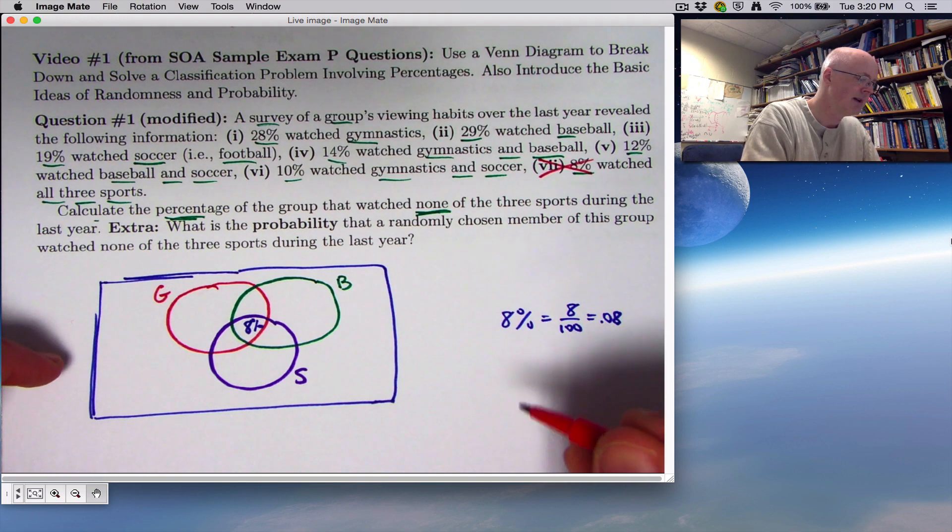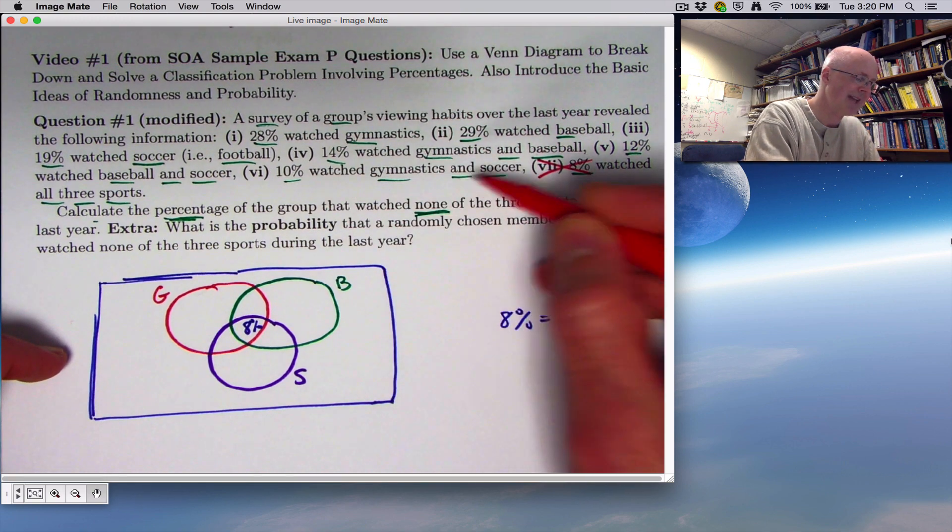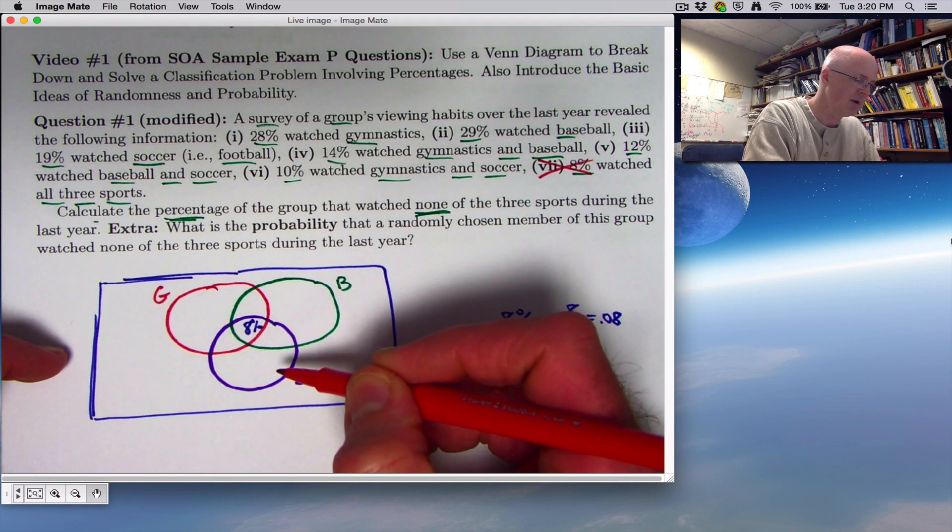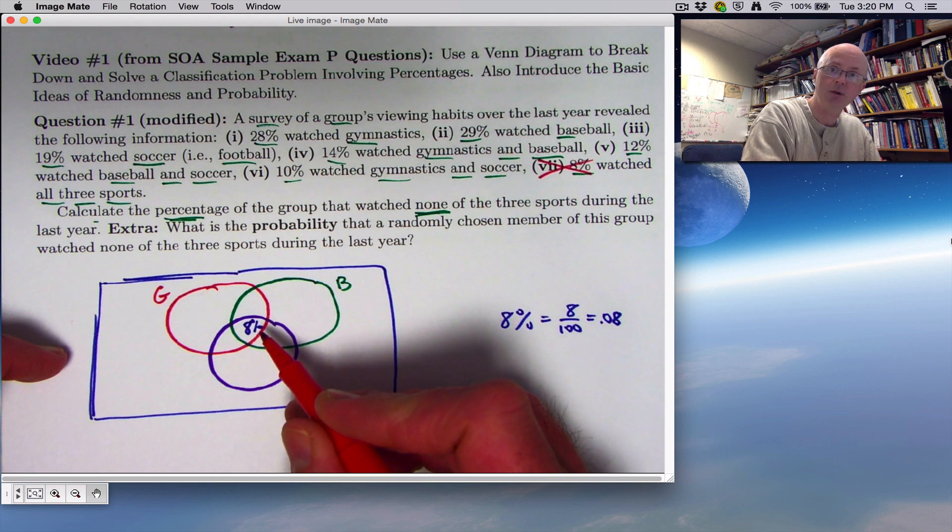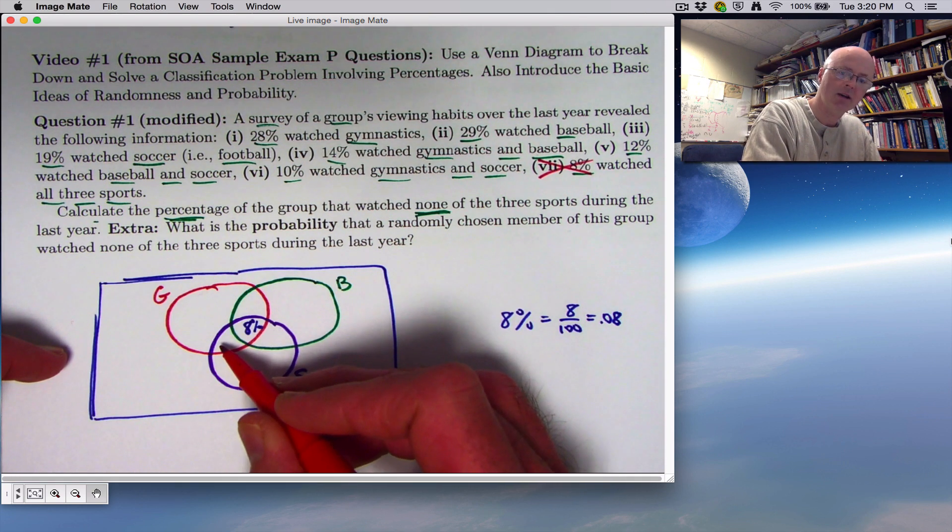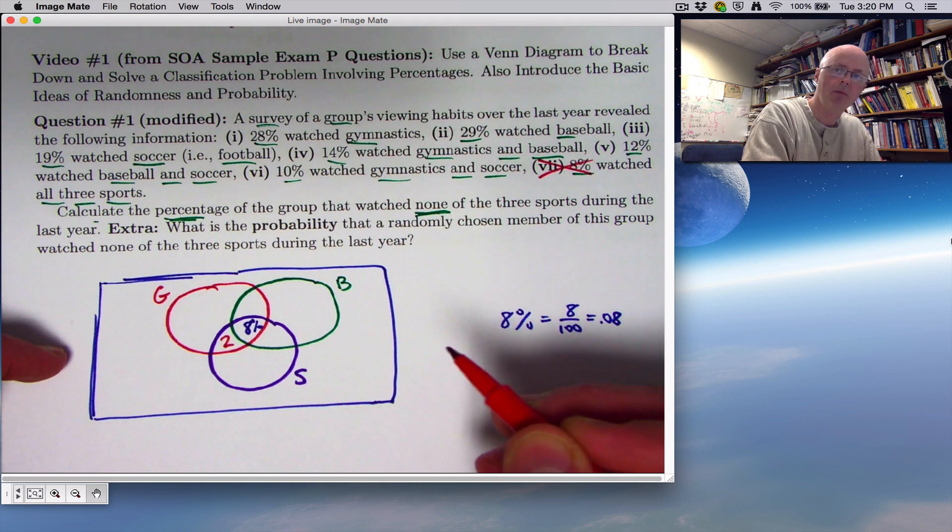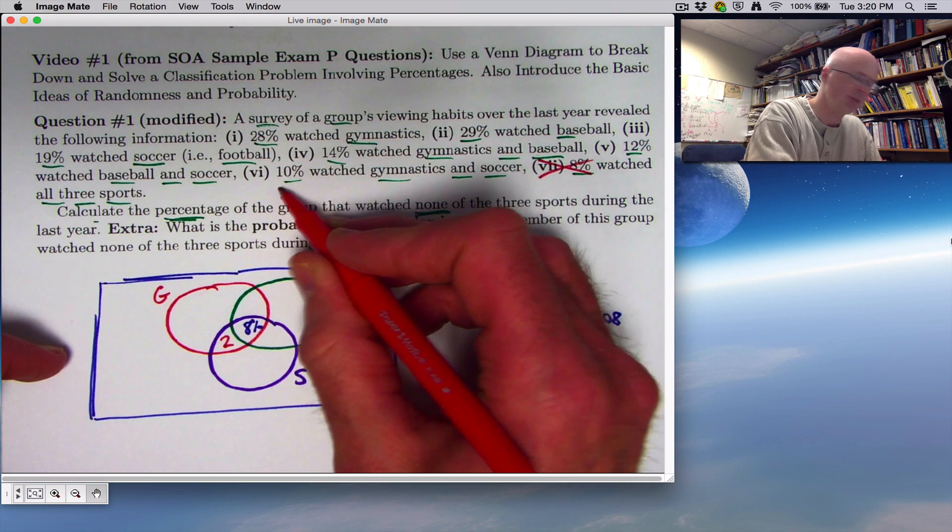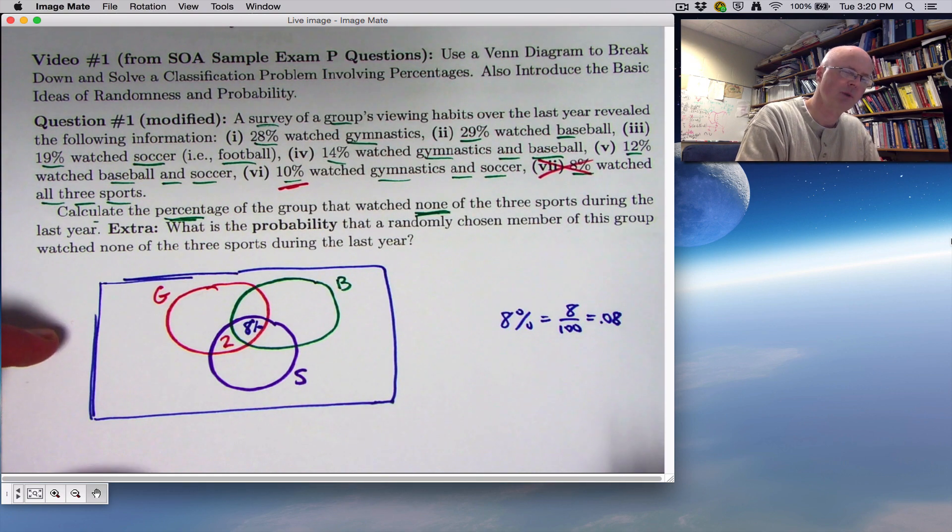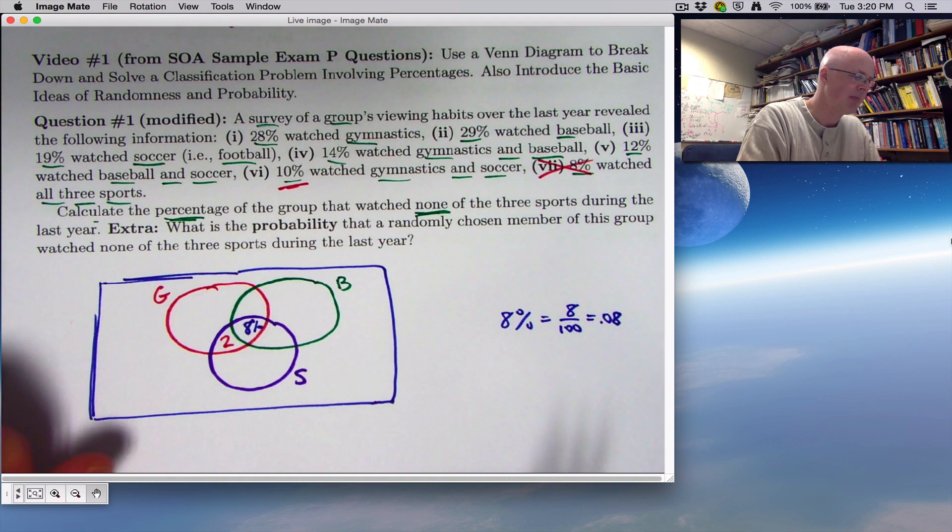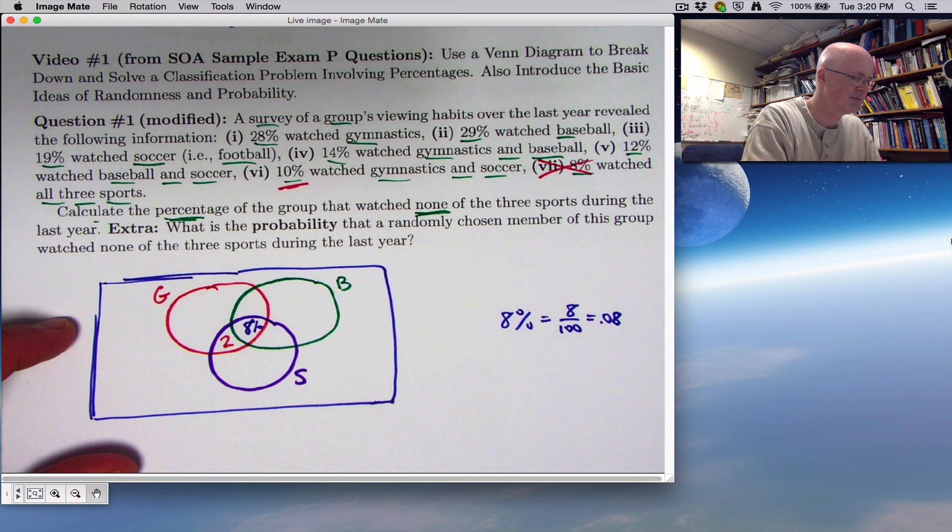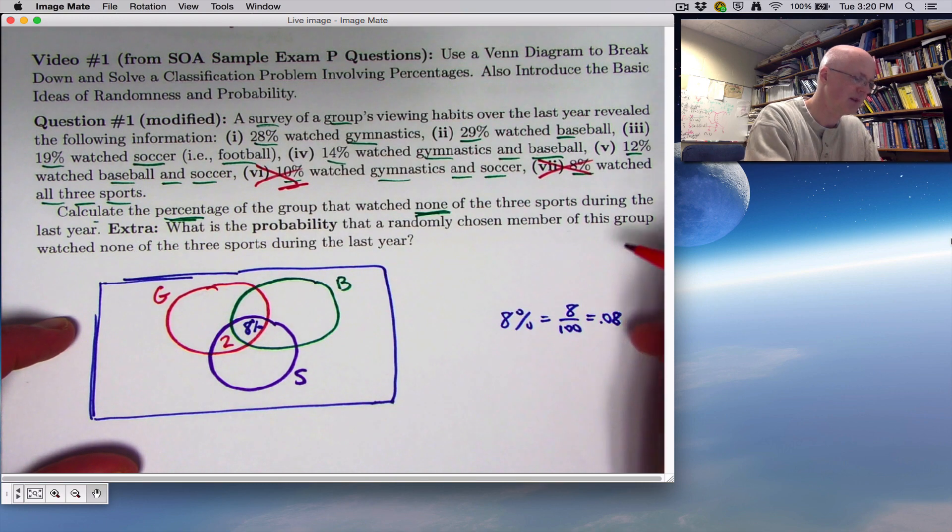Let's cross things off as we use them. We'll continue working backwards. 10% watched gymnastics and soccer. Those are the people that are in both the red circle here and the purple circle. We've already accounted for 8% of them. So don't put a 10 here. Put a 2 instead. Put whatever number you need to put there so that these two numbers add up to 10%.